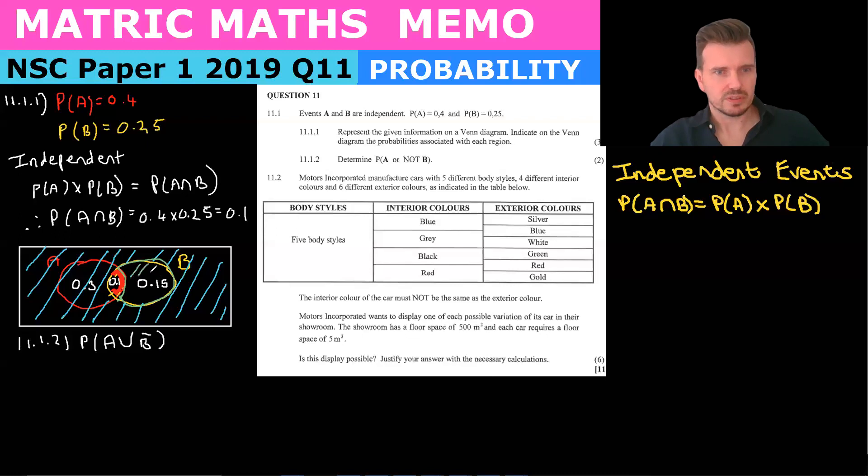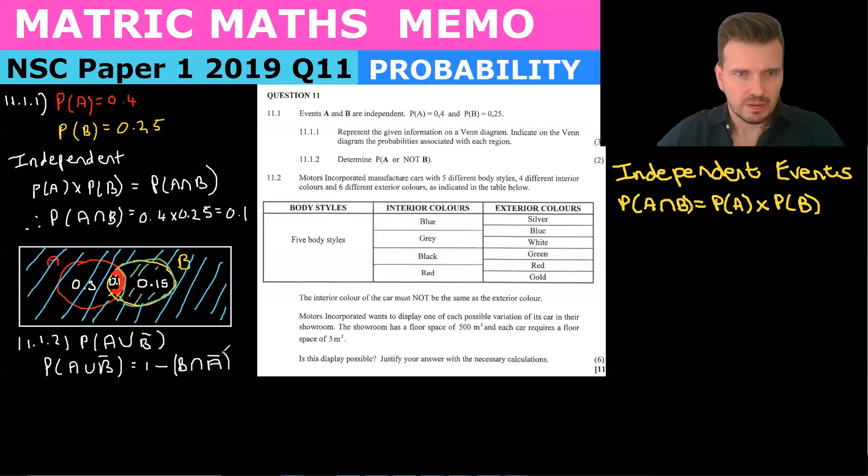So the probability of A or not B is going to be the red bit plus the blue bit that I've highlighted as well, and so the only bit it's not going to include is going to be the B here by itself. So it's basically going to be 1 minus 0.15. So we can say the probability of A or not B is equal to 1 minus B only, so that's kind of like saying B and not A, which is equal to 0.85.